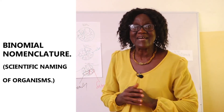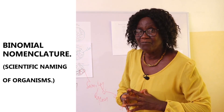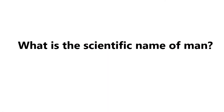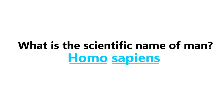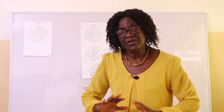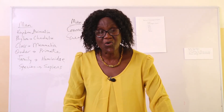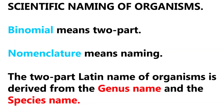Now I want to look at how organisms are named — binomial nomenclature. Man is known as Homo sapiens: homo comes from the genus name and sapiens from the species name. Binomial means two parts; nomenclature means naming. So the two-part Latin name given to organisms comes from the genus and the species names.